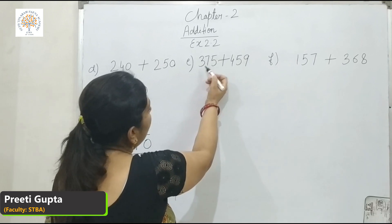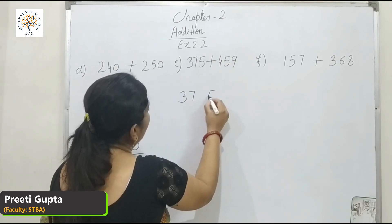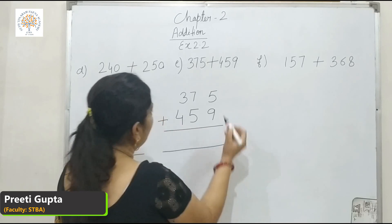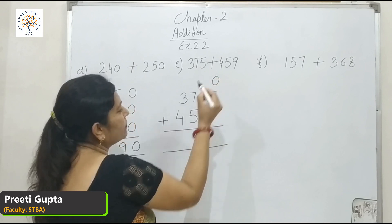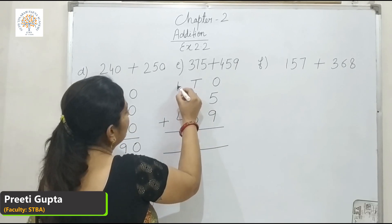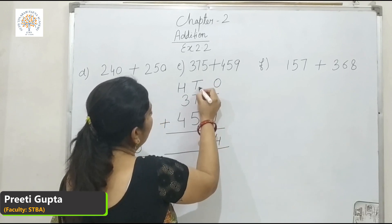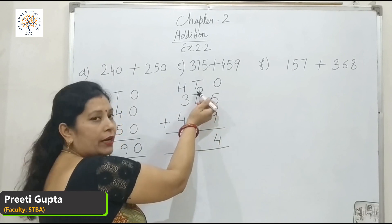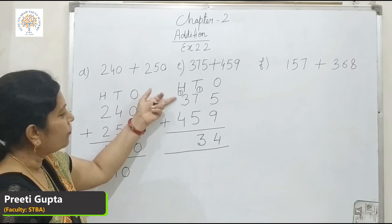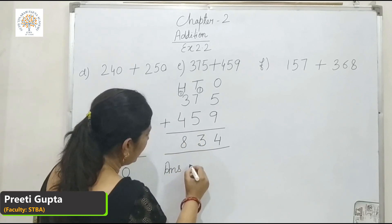Part E: 375 plus 459. 9 and 5 are in the 1's place, 7 and 5 are in the 10's place, and 4 and 3 are in the 100's place. 5 and 9 is 14 — write 4 here, carry 1 here. 7 and 5 is 12, and 12 and 1 is 13 — write 3 here and carry 1 here. 3 and 1 is 4, and 4 and 4 is 8. So our answer is 834.